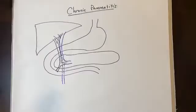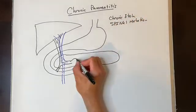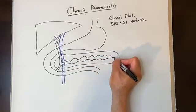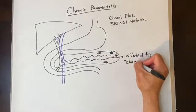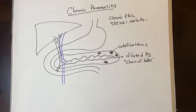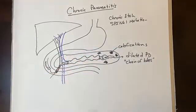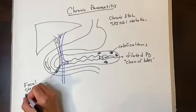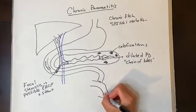Chronic pancreatitis can be related to chronic alcohol use; there is also a hereditary pancreatitis from a mutation in the SPINK1 enzyme. Chronic pancreatitis is characterized by dilated segments of the pancreatic duct — the so-called chain of lakes appearance — along with calcifications in the pancreatic gland from fat saponification and an overall shrunken gland. Surgical indications are varied. If the patient has a focal stricture causing pancreatic duct obstruction, they may be a candidate for ERCP and pancreatic duct stenting, though this tends not to work very well long-term and surgery is likely needed.